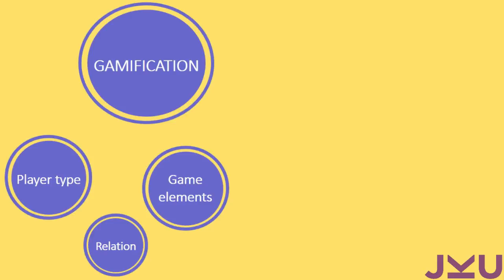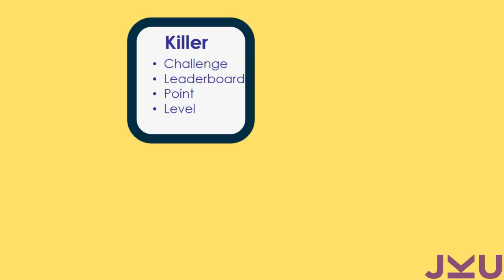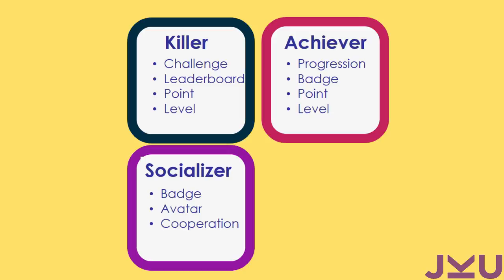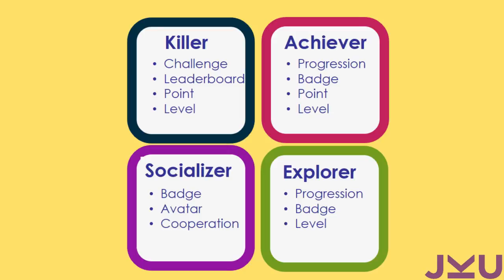We can find some relation between player types and game elements. For example, the killer likes challenge, leaderboard, points, and levels. The achievers like more progression, points, and levels, along with socializer and explorer elements. So when you are designing a game or a gamified environment, you have to consider putting some elements for each kind of player to motivate all the audience.